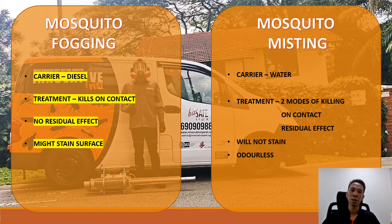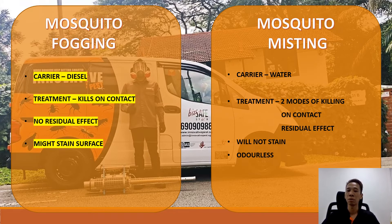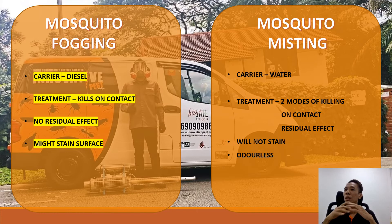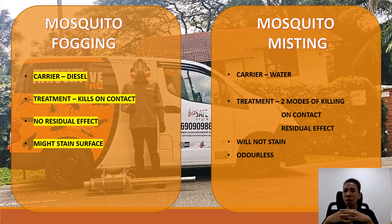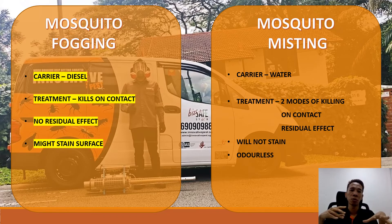Residual effect means that when we do the misting, it mainly targets all the thick landscape — the leaves, the branches, the landscape area. It leaves a thin layer of the preparation on these surfaces. These are the targeted areas where mosquitoes like to rest before and after feeding. So those are the two treatment methods between fogging and misting.